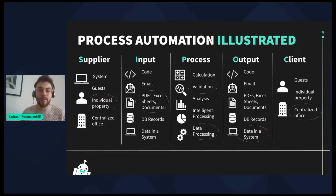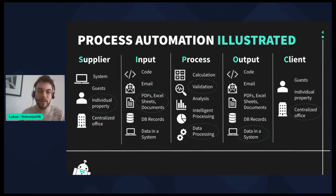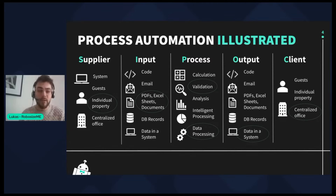Looking at the supplier stage, when it comes to process automation, the source of data can be anything from a system, an individual guest, a property, or a centralized office. The input that process automation can work with is very rich as well — it can be a piece of code, an email, files, Excel sheets, PDFs, database records, or other records.